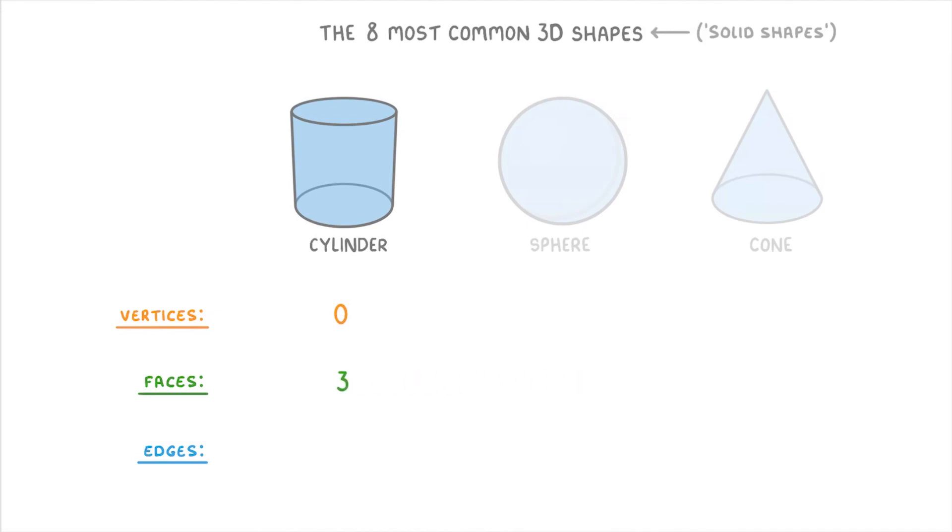They have 3 faces, a flat one at the top, a curved one around the middle, and another flat one at the bottom. And then they have 2 circular edges, 1 around the top, and 1 around the bottom.